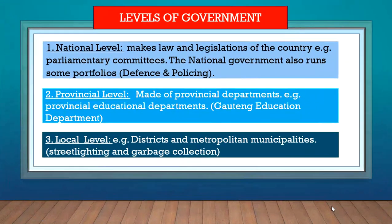The government has three levels. There's the national level. This is where the laws and the legislation of the country are made, for example, in parliament. But the national government also runs certain portfolios, for example, defence, our soldiers, and also policing. The national government is in charge of those portfolios.